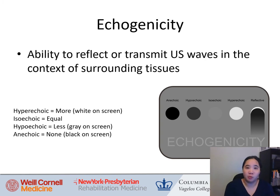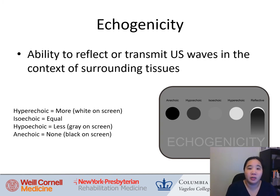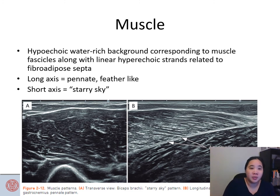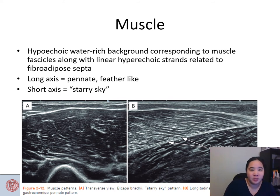Echogenicity is a critical concept — it's the ability to reflect or transmit ultrasound waves in the context of surrounding tissues. Hyperechoic means more reflection and appears white; isoechoic is equal; hypoechoic is less and appears gray; anechoic is none and appears black. Muscle has a hypoechoic water-rich background corresponding to muscle fascicles with linear hyperechoic strands from fibroadipose septa. In long axis it appears pennate or feather-like; in short axis it looks like a starry sky.